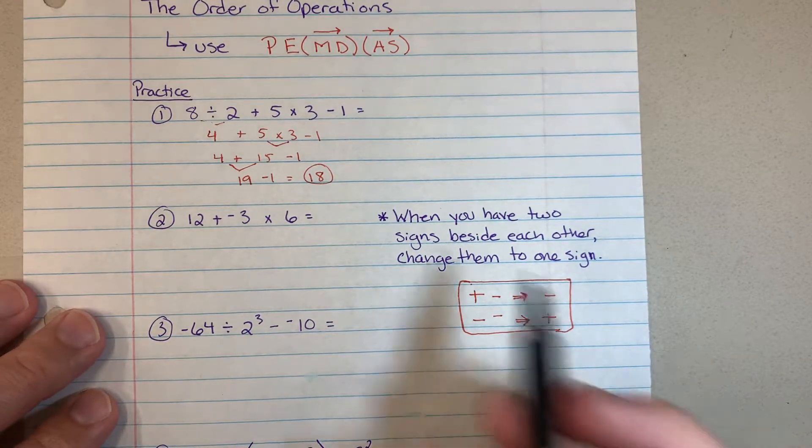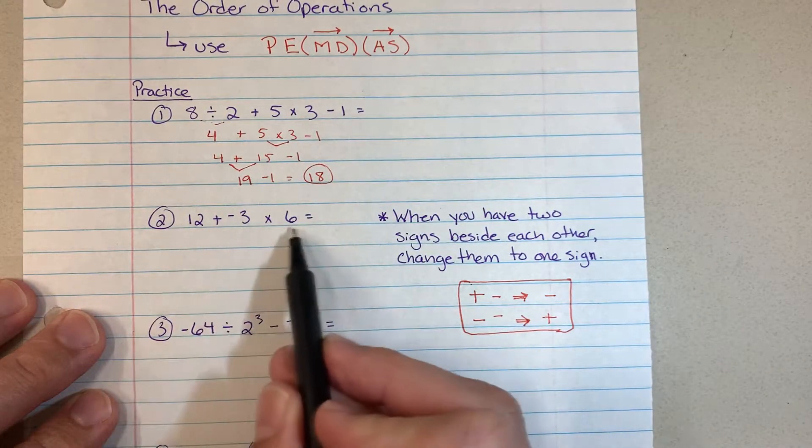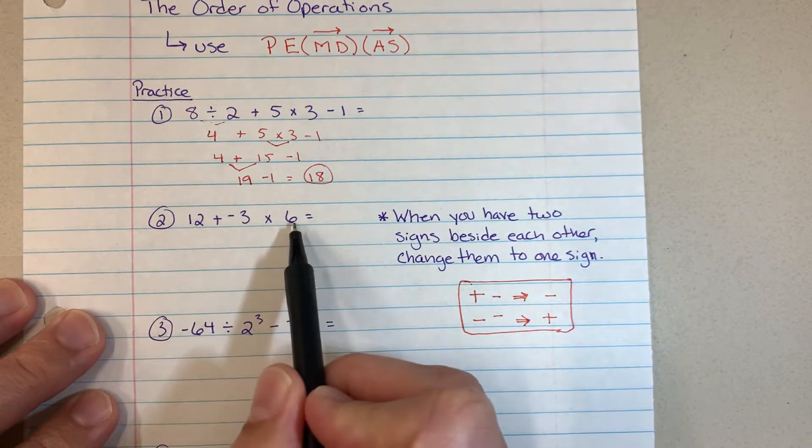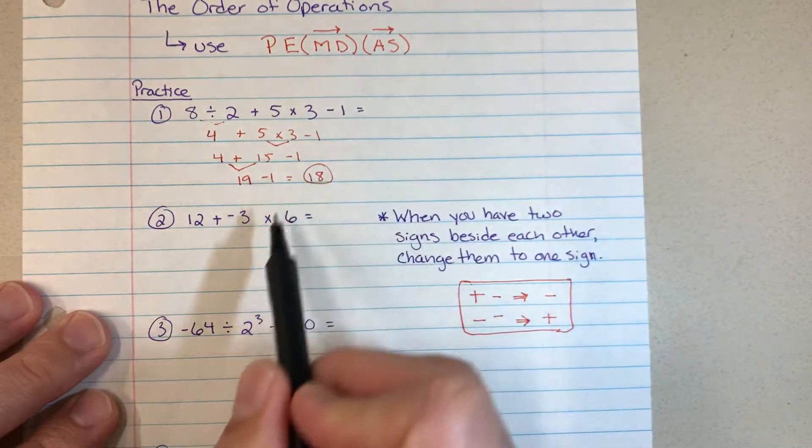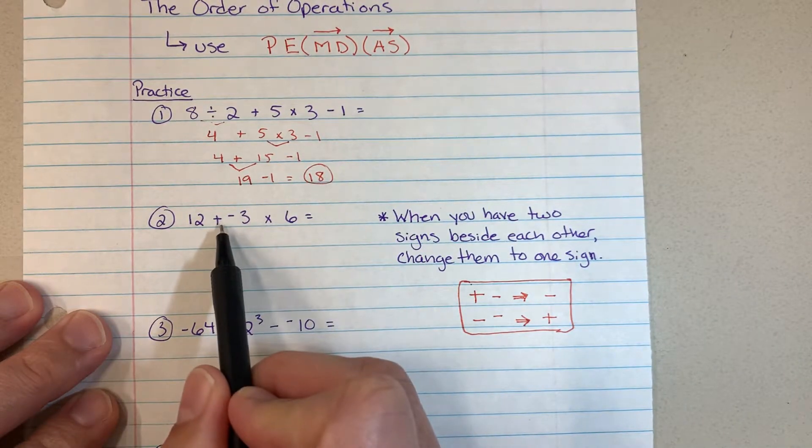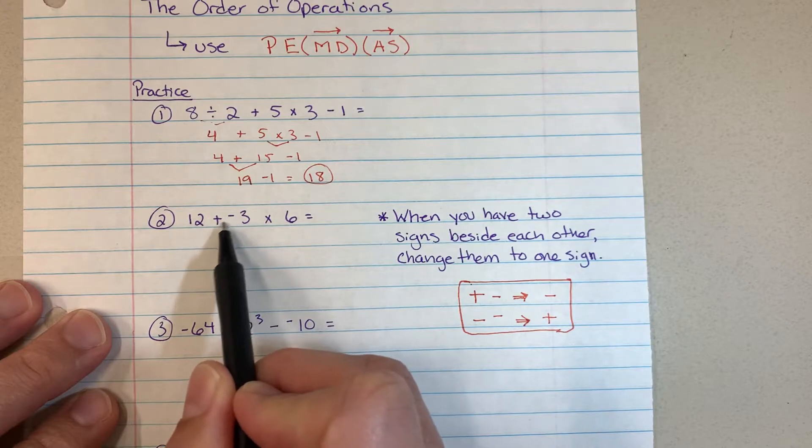Problem 2. Any parentheses? No. Exponents? No. Multiplication and division? Yes. There's just one thing that I realized right here. I have double signs right next to each other.